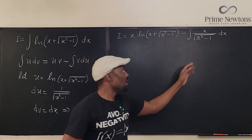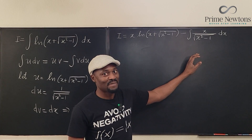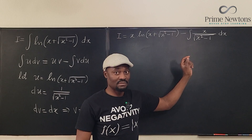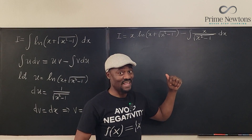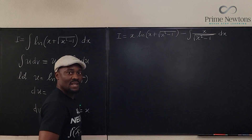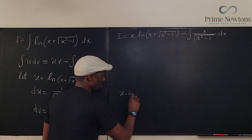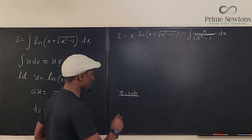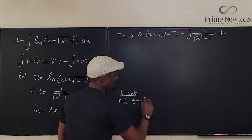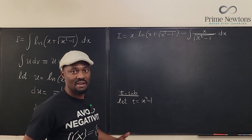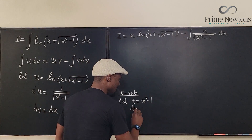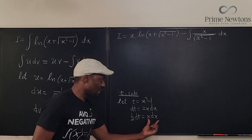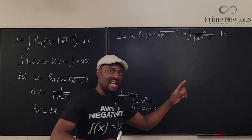Don't be tempted to do a trig substitution here — that's not smart because you can see a clear u-substitution. The derivative of what is under the square root sign is what's sitting on top. So u-substitution is your friend. Since I've already used u, let's call it t-substitution. Let t equal x squared minus 1, so dt equals 2x dx, which means one half of dt equals x dx. And we can see x dx right there, so we replace x dx with one half dt.